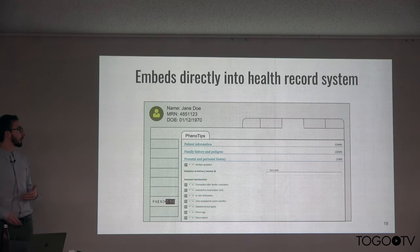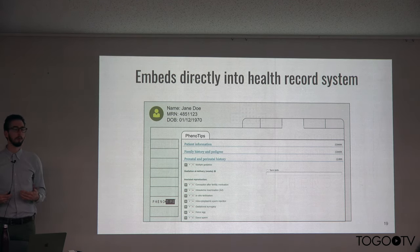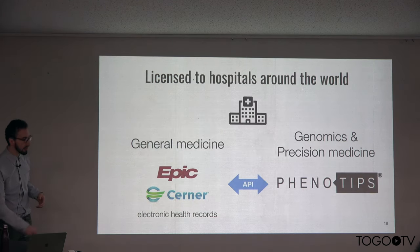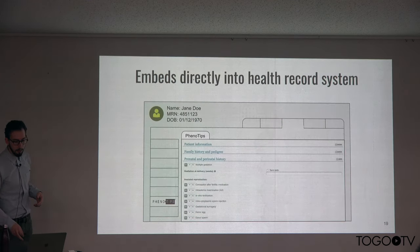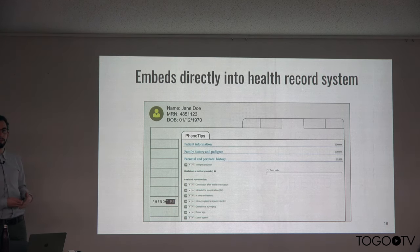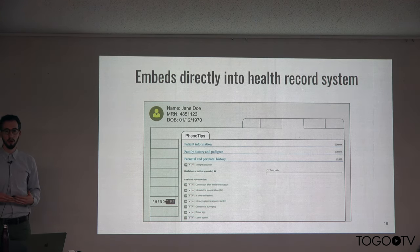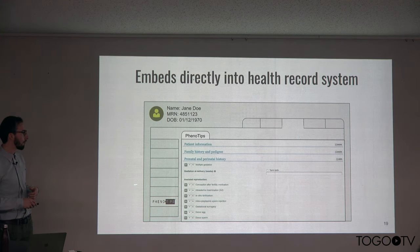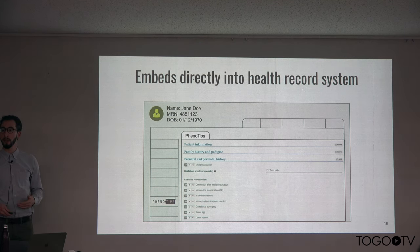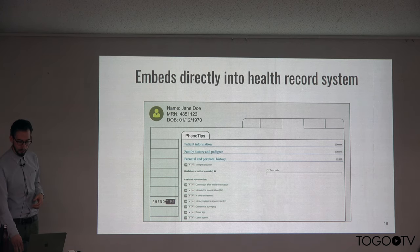This includes actually embedding Phenotips directly within the electronic health record system visually. Behind the scenes they are two separate systems talking over APIs, but from the perspective of the clinician they appear to be one tool. They don't have to leave their electronic health record system in order to fill out the Phenotips record for the patient, record the HPO terms, and draw the pedigree — they can do that right within the health record system.